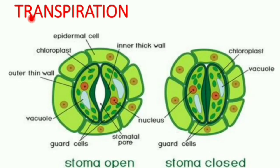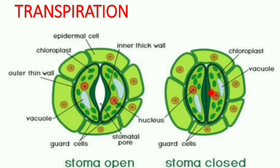Coming to transpiration. It is a process of evaporation of water in the form of water vapor through stomata. This is the structure of stomata — it consists of two guard cells. When water enters into the guard cells, the stomata get opened and transpiration occurs. At the end of transpiration, the guard cells become flaccid and the stomata get closed.